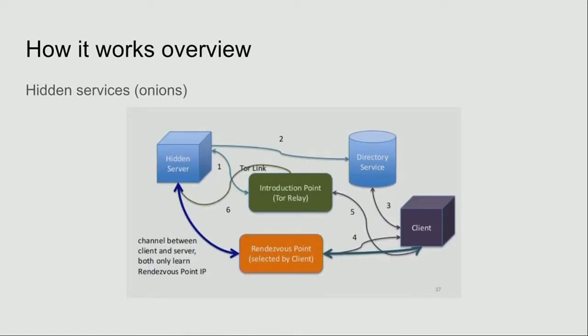So we'll briefly go over how hidden services work. The hidden server — let's call him Silk Road. He talks to the directory service and says 'I'm Silk Road, if anyone wants to find me, go to this introduction point.' Then the client goes 'I want to go to Silk Road,' and the directory says 'talk to this introduction point.' The client sets up a rendezvous point, Silk Road hears about it, and they meet there. Long story short, you get to talk to Silk Road. Each of these connections is also anonymized — Silk Road doesn't know who you are and you don't know who Silk Road is. That's how onion services work. It lets you host a website resiliently that people can't take down — they don't know where it is or who's hosting it.